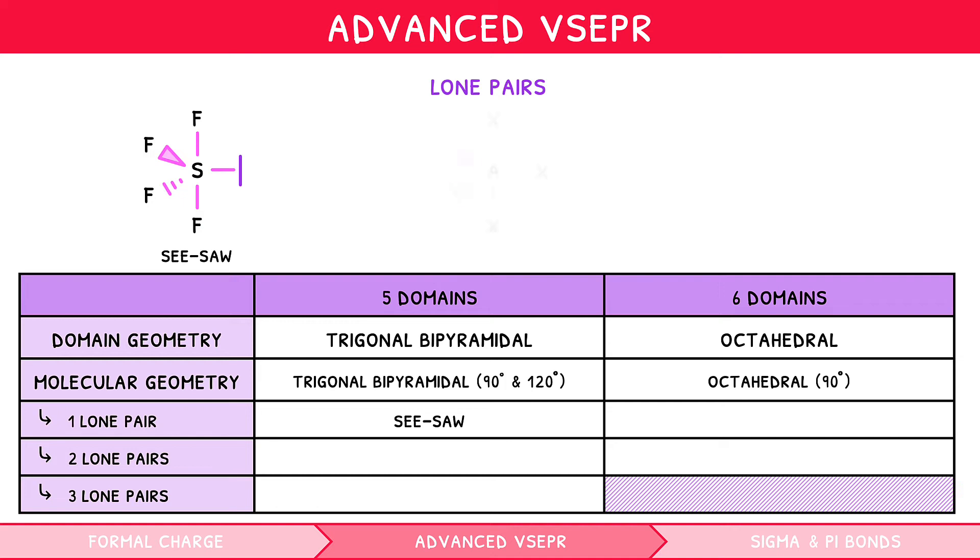If the electron geometry is trigonal bipyramidal with two lone pairs, the resulting shape is known as T-shaped, for example, ICL3. If the electron geometry is trigonal bipyramidal with three lone pairs, the resulting shape is linear, for example, I3-.